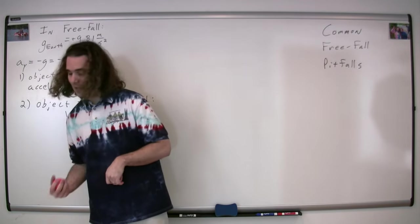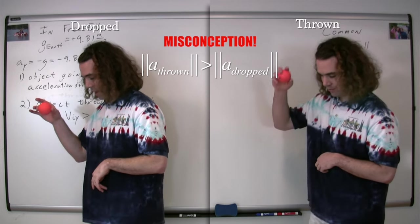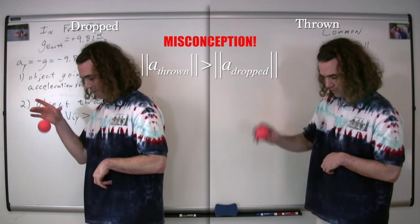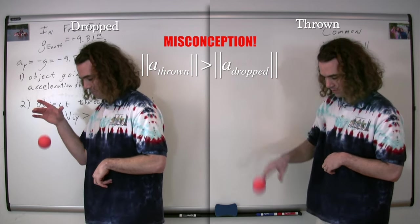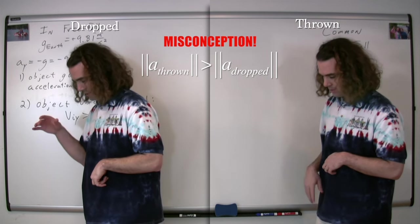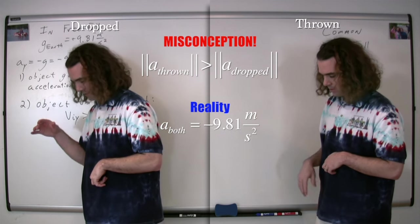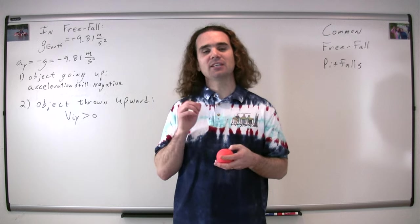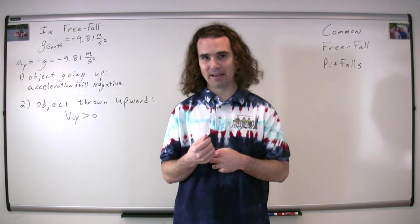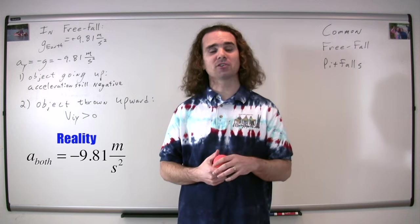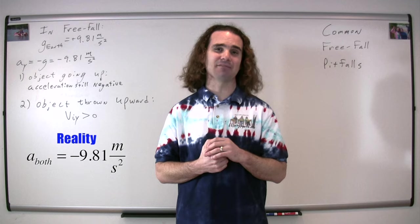Another misconception is that if I drop a ball, and if I take a ball and throw it downward, that the ball that I threw downward will have an acceleration downward that is larger than if I just drop the ball. Billy, please help dispel this misconception. Well, we know the dropped ball and the ball thrown downward will both have accelerations of negative 9.81 meters per second squared because they are both objects in free fall. I think it's because people often confuse velocity and acceleration. The ball that is thrown is moving faster; however, its velocity is not changing faster. So it must be because people see the ball moving faster, they assume it must be accelerating more quickly. Yes, Bo. The thrown ball is moving faster, therefore people think it is accelerating faster. However, it is not. Both objects are in free fall and therefore both have an acceleration in the y direction of negative 9.81 meters per second squared.